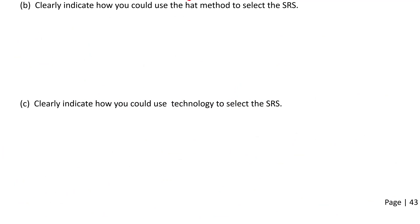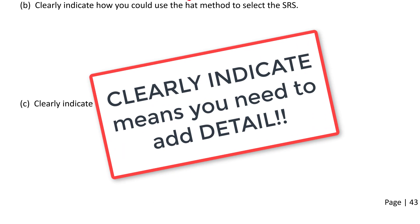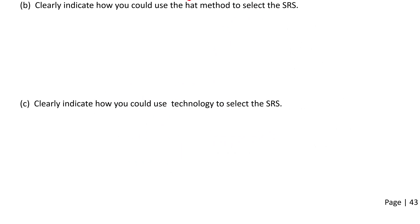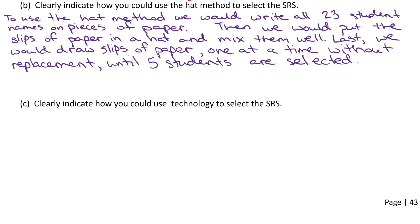Parts B and C repeat the same idea. For part B, they want us to clearly indicate how you could use the hat method to select the SRS. To use the hat method, we would write all 23 student names on pieces of paper, put the slips of paper in a hat and mix them well, then draw slips of paper out one at a time without replacement until five students are selected.